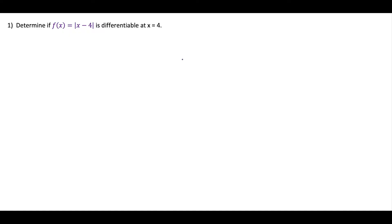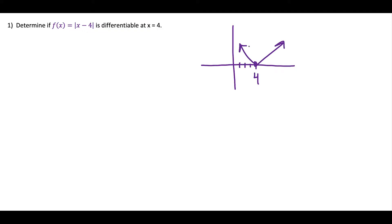For this first question, I'm going to go through this three different ways so that all the strategies are met. But the easiest way to do this is to just sketch it out. Absolute value of x minus four has that classic V shape, and there's a sharp turn at x equals four, which tells me right away that this function is not differentiable at x equals four.